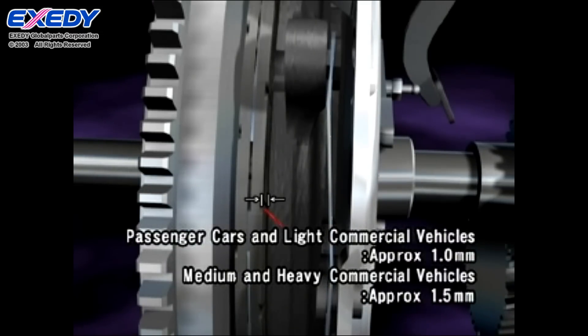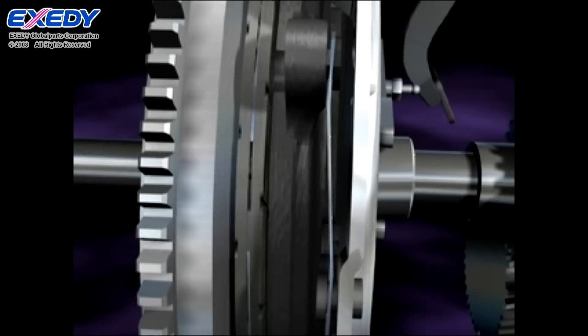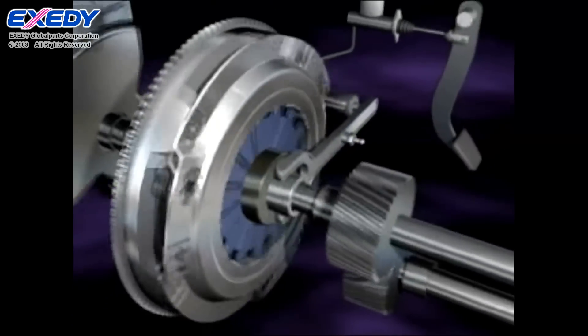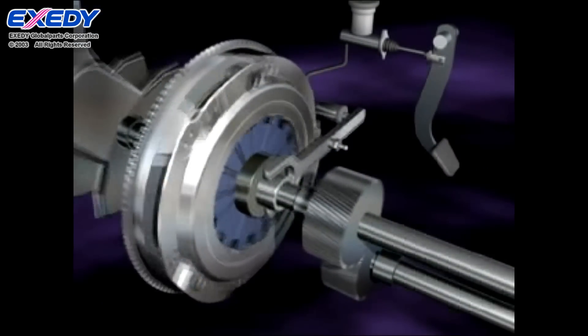The clearance between the clutch disc and pressure plate when disengaged is approximately 1mm for passenger cars and light commercial vehicles, and 1.5mm for medium and heavy commercial vehicles. This engagement and disengagement is the basic principle of a manual clutch.